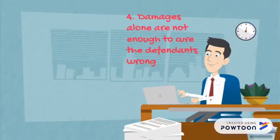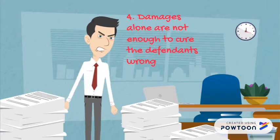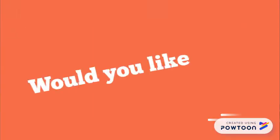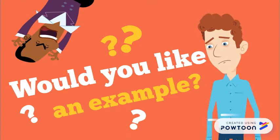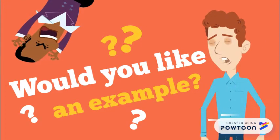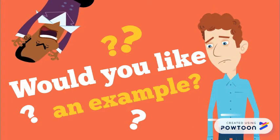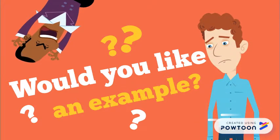A fourth element the plaintiff will want to be able to show is that damages alone are not enough to cure the defendant's wrongdoing. For example, in copyright cases where the real issue is of failure to pay licence fees, the courts may be less willing to provide injunctive relief on the grounds that damages alone would be enough to meet the plaintiff's requirements. Conversely, this is unlikely to be the case in trademark or passing off issues where the risk of permanent damage to the plaintiff's reputation is considerable.